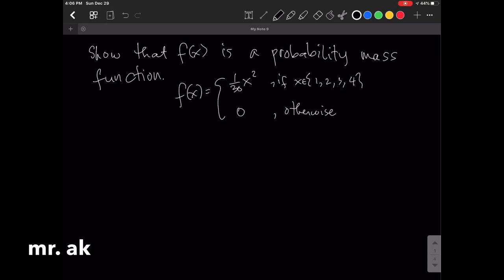Now, again, to show, we need to show that the two conditions hold. The first condition is that the individual probabilities should be greater than or equal to 0, and the second condition is that the sum of our probabilities should be equal to 1.